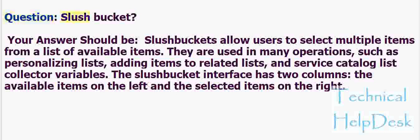Question: What is a slush bucket? Your answer should be: Slush buckets allow users to select multiple items from a list of available items. They are used in many operations such as personalizing lists, adding items to related lists, and service catalog list collector variables. The slush bucket interface has two columns: the available items on the left and the selected items on the right.